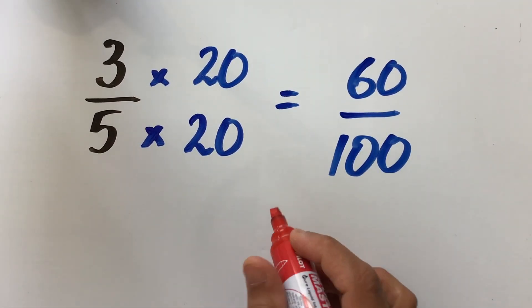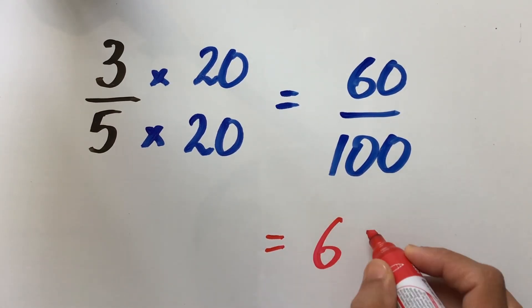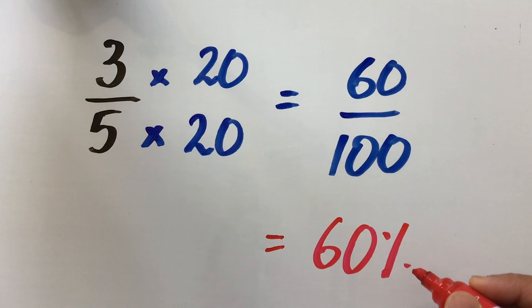Now, 60 over 100 is same as 60 percent, therefore, we could just write it as 60 percent. So, 3 over 5 is same as 60 percent.